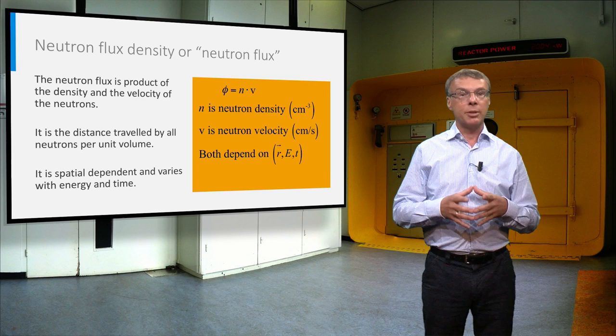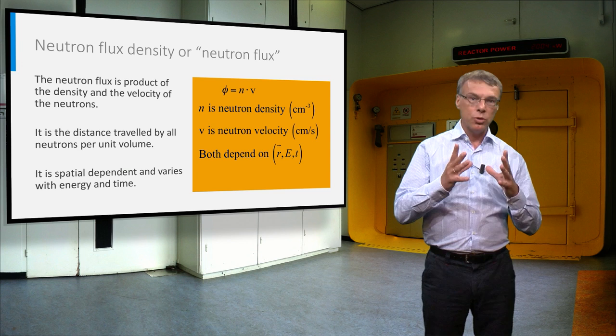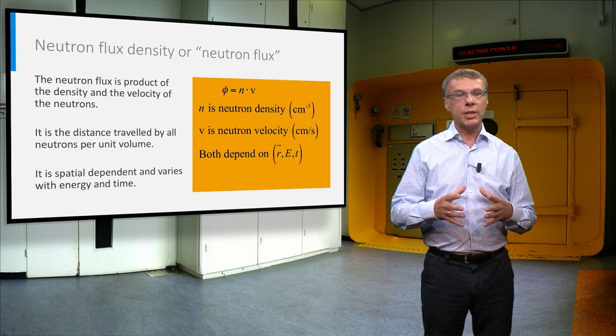Typically the neutron flux density depends on space, energy and time. For simple applications with no energy dependence, the one-group approximation can be used, in which it is assumed that all neutrons have the same energy. In the remainder of this video we will adopt this one-group approximation.